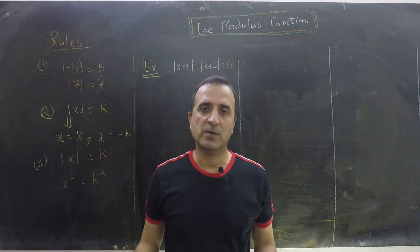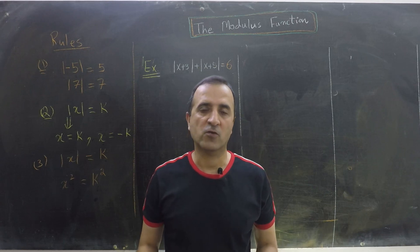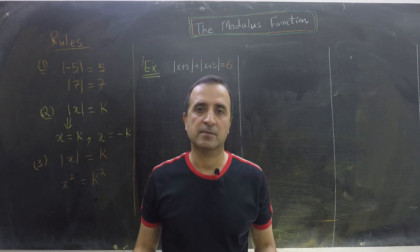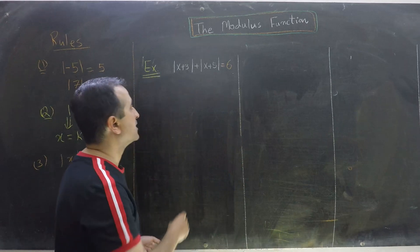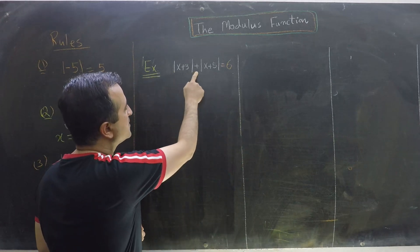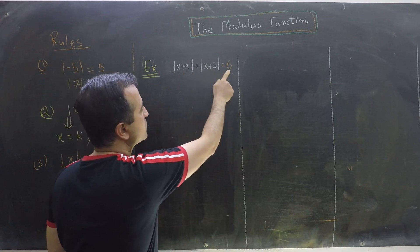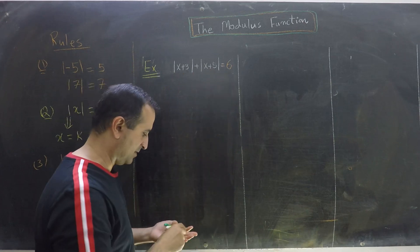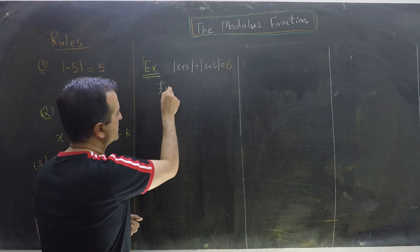Let's do another example. This example is more intriguing because it has two mod functions in it. We are given mod of x plus 3, plus mod of x plus 5, is equal to 6, and we have to find x.